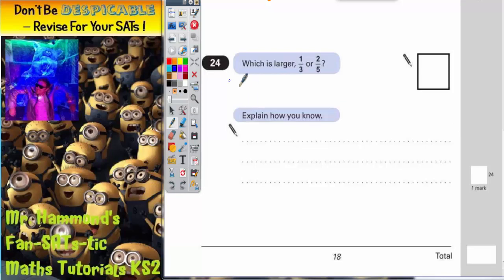Question 24. We are getting towards the end of the paper, so this is going to be a level 5 question. It will be a little bit harder because we've got to explain. So it says which is larger, 1/3 or 2/5? Now there are a couple of different ways you could go about this.